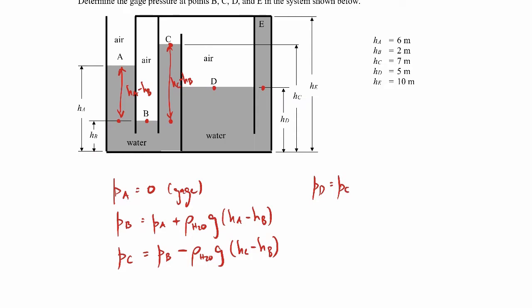So the pressure at E is going to be the pressure at D, and then we're going to subtract out the weight of the water as we move up this distance. We're moving up here.